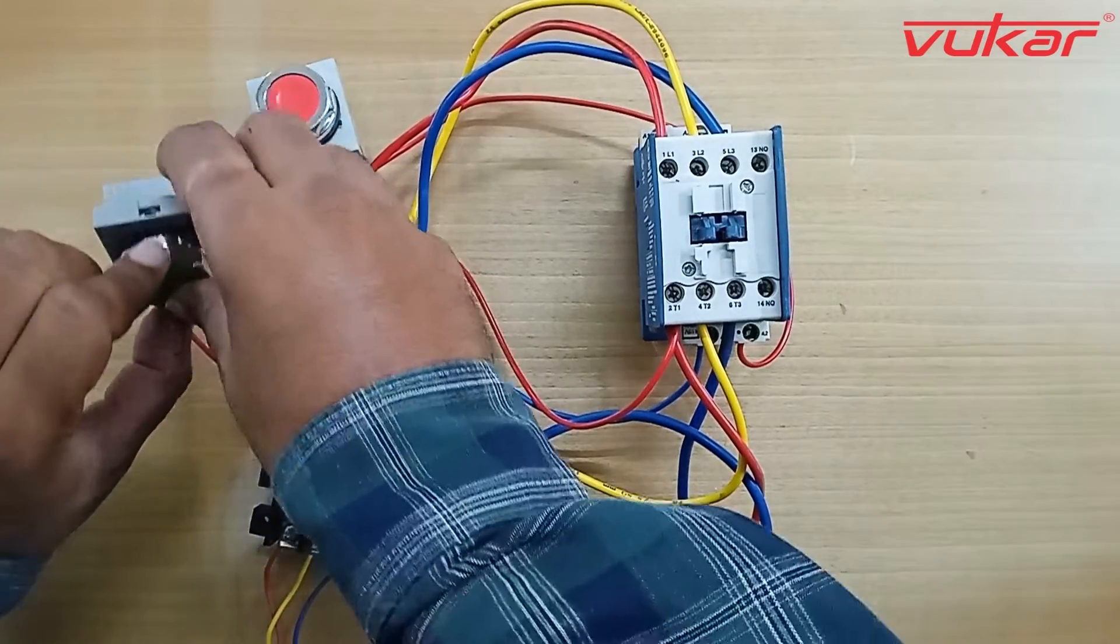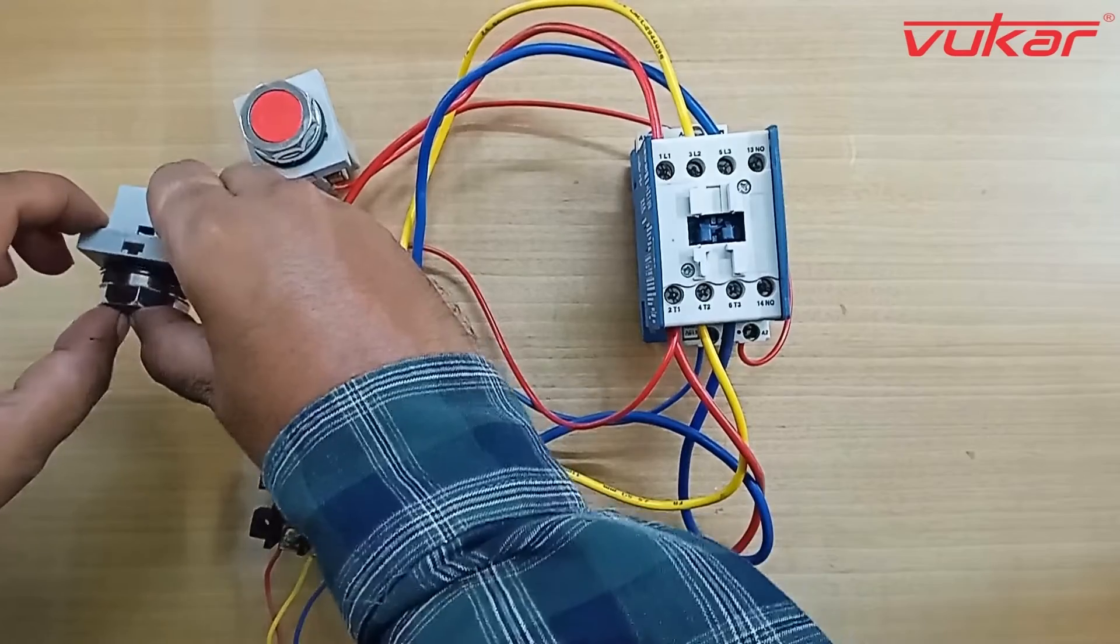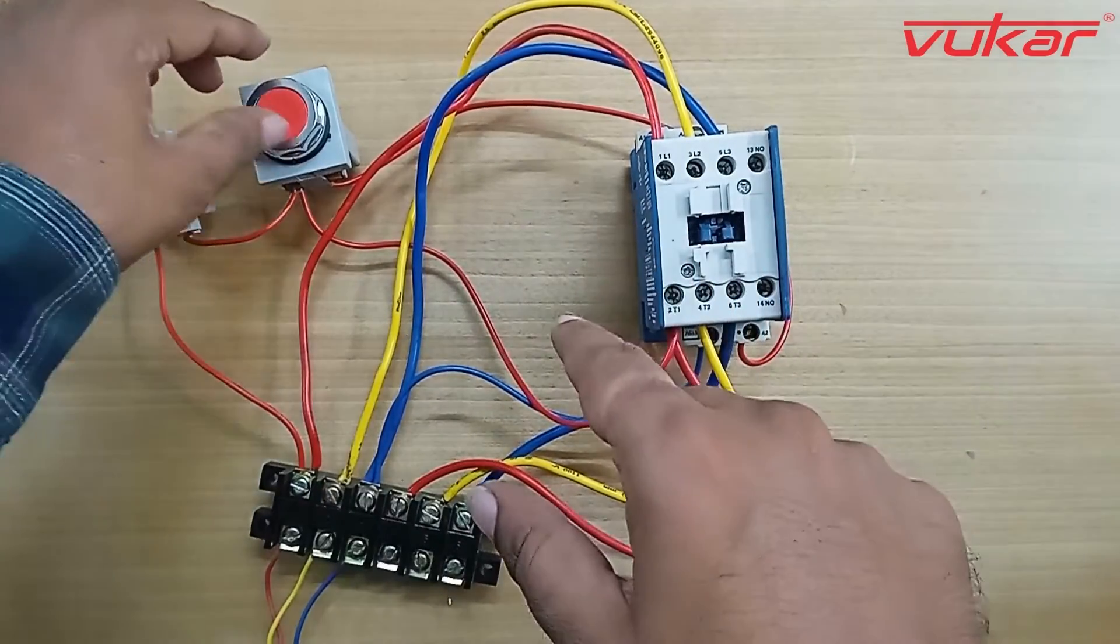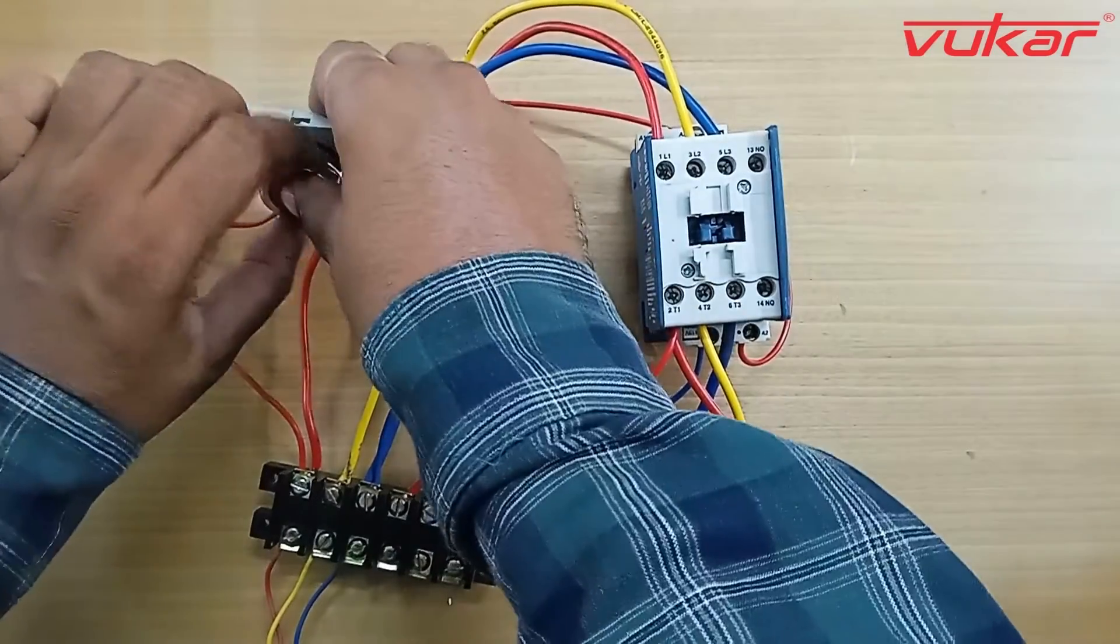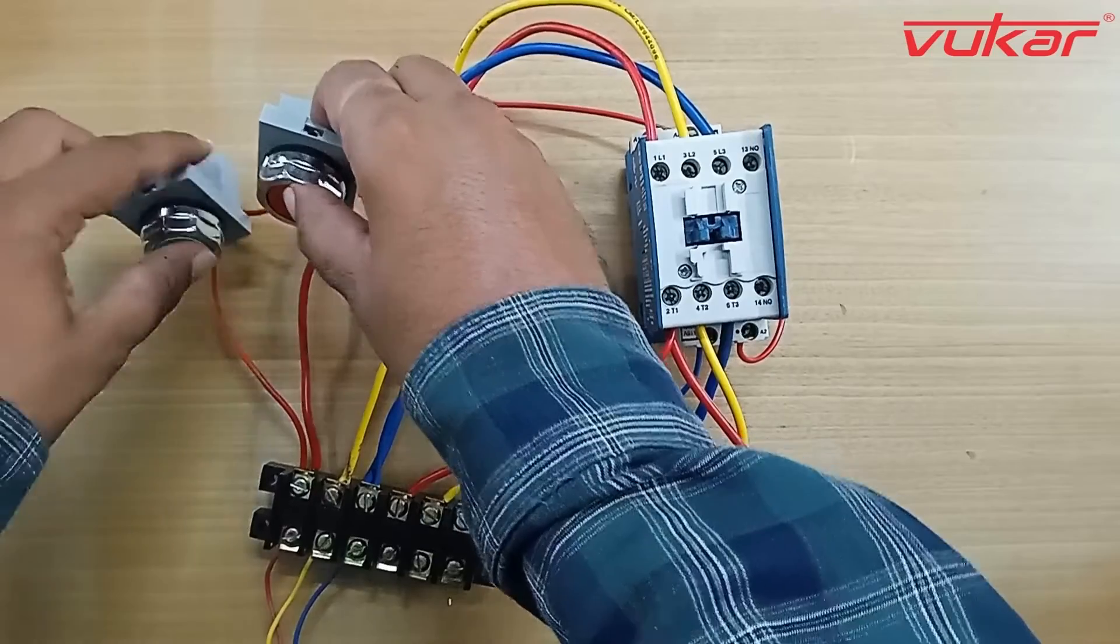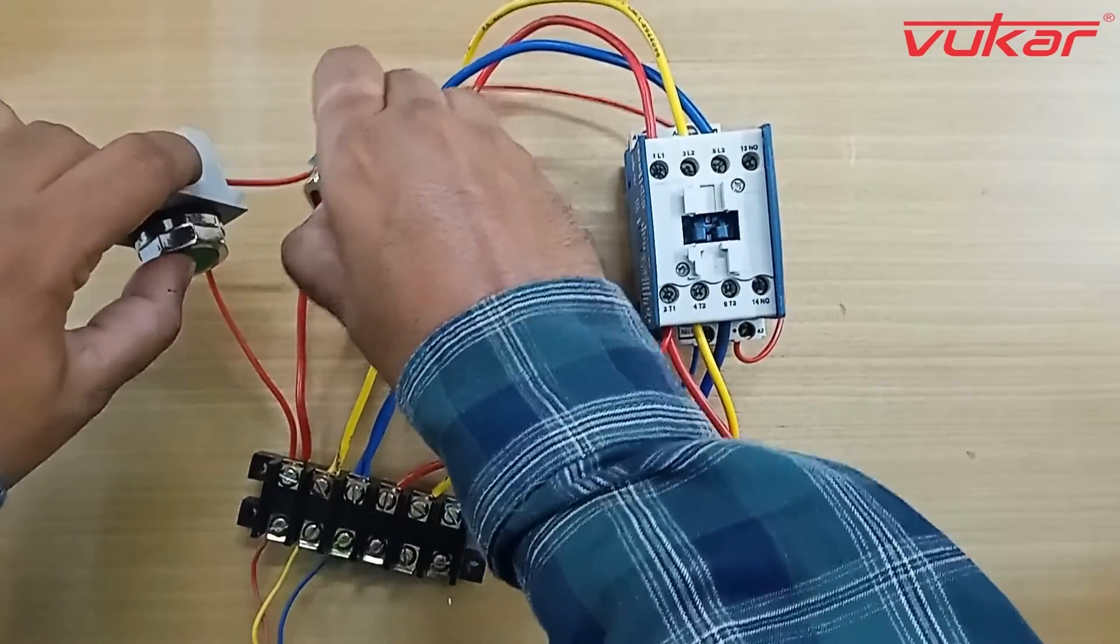Now when I press the green push button, contactor will turn on and it will also hold the contactor. And when I press the off-push button, the contactor will turn off. You can see the working of on-push button and off-push button, contactor is turning on and off.